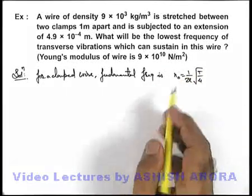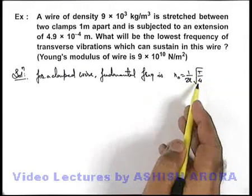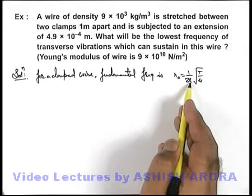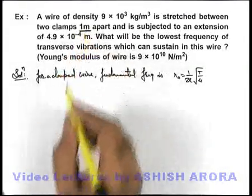Here we need to find out the value of T and μ, as the length of wire is already given to us which is 1 meter.